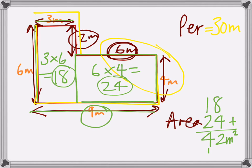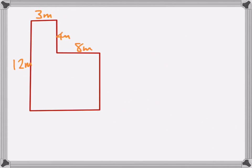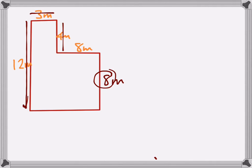There is another way to do that area, which I'll show you on the next example. We've got missing dimensions here. Twelve is the long length, four is the short length, so the difference would be eight metres. Going along, we have got three metres for the short bit and eight metres for the longer bit, so altogether we'd have eleven metres. So let's work out our perimeter.